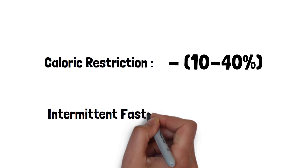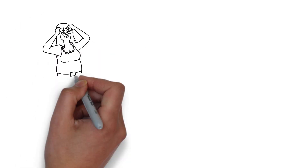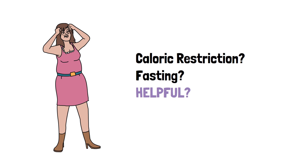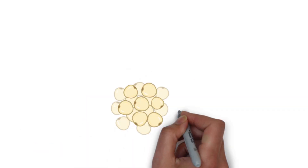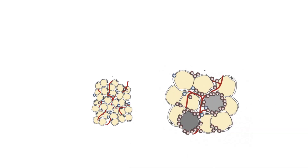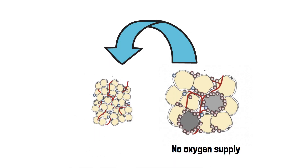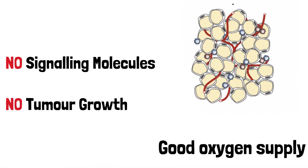Intermittent fasting is when you eat only during a certain window of time during the day — for example, eating only between 12 to 8 pm and fasting for the remaining hours. Fasting actually reverses the enlargement of adipose tissue. As mentioned before, inflammation occurs when the fat cell becomes too big and isn't able to receive enough oxygen from the surrounding blood vessels. So when the cell decreases in size with fasting, it is now able to receive adequate amounts of oxygen flow so it doesn't die or become inflamed. And since the fat cell isn't inflamed anymore, it won't produce signaling molecules that induce tumor growth.